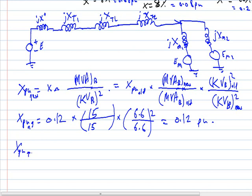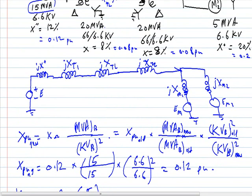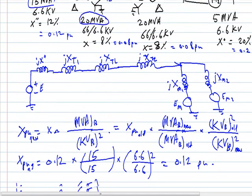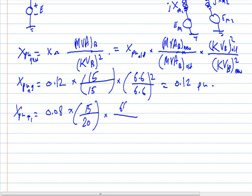The per-unit value of transformer one is the old per-unit value, which is 0.08, multiplied by the new base MVA of 15 over the old base MVA of 20. From the graph shown here, multiplied by 66 kV, which is the old base voltage.